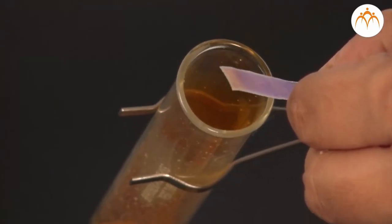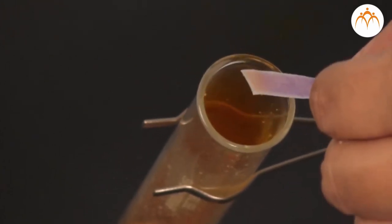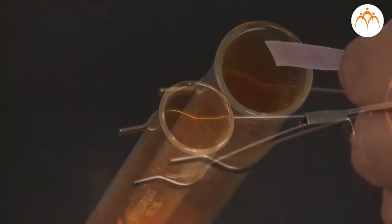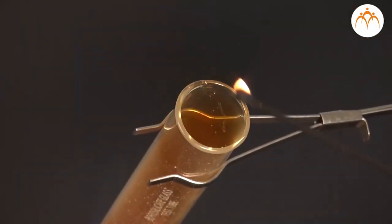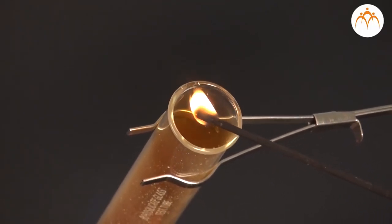We will hold a moist blue litmus paper at the mouth of the test tube. We want to see the effect. We will also hold a burning matchstick or burning candle near the mouth of the test tube. What do you see? You will know that there is change in lead nitrate. A gas is getting released.